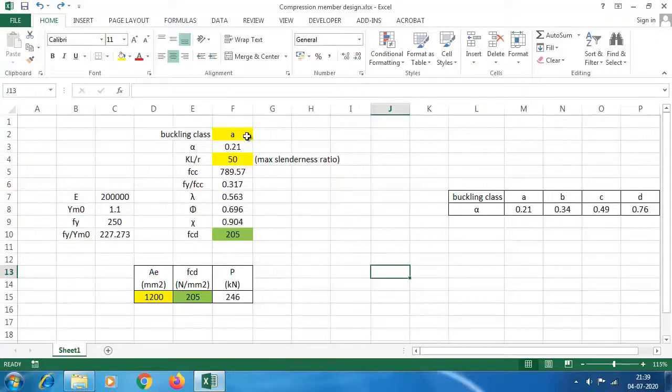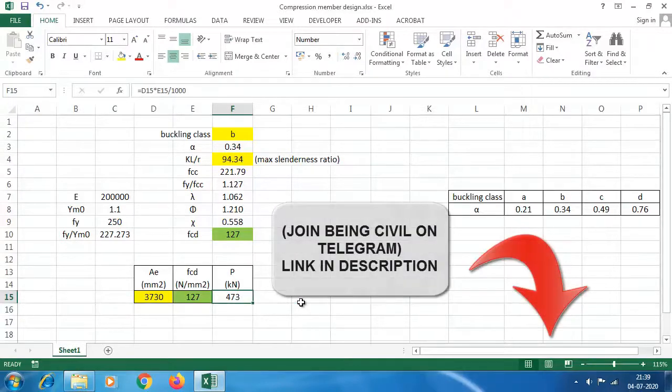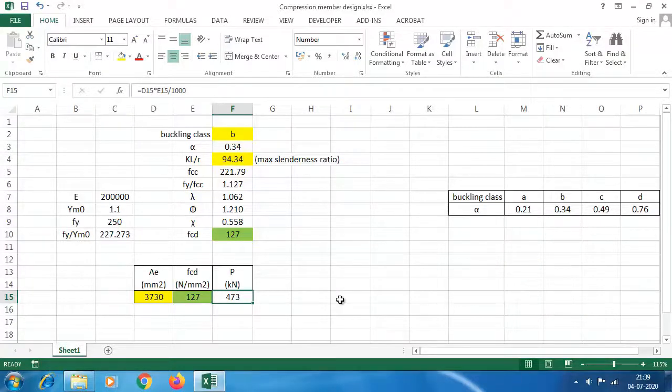I have prepared an Excel sheet. You have to change the buckling class, the maximum slenderness ratio. You see the Fcd is 127 and AE in our case is 3730. You got the design compressive strength PD. Anyone who wants this Excel sheet, go and join our telegram channel being civil. The link is in the description. I will upload this Excel sheet there.